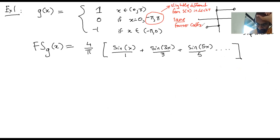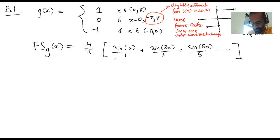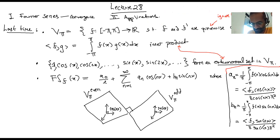That's a general important fact about integration: integrals don't change if you change one point. A student asks about the bounds staying the same — the key point is that the Fourier coefficients depend on integrals, and the integral is the area under some curve. Area doesn't change if you remove one point or change the height at one point. That's why the Fourier series is the same.